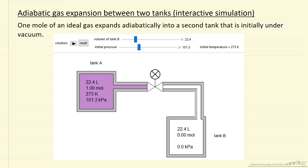We can change the initial pressure with the slider, and that's going to change the initial temperature in order to have one mole of gas, because the volume of the tank on the left is fixed.